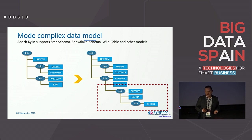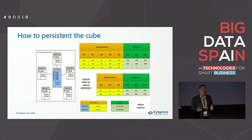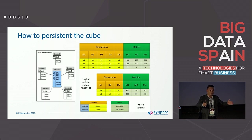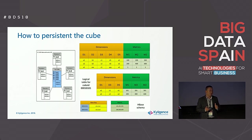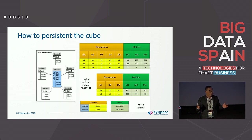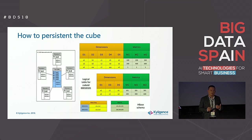We not only support the star schema but also very complicated data models like Snowflake and others. For storage, we use HBase as a key-value store. The key is actually your dimension combination, and the value is your metrics result — sum, count, even distinct count. We do a lot of hard work to resolve data explosion challenges. If we calculate every combination together, that would be a disaster. We use what we call partial cubing and many optimizations to reduce that. From our best practice, most production deployments cost about 20 to 30 percent of the source data. So if you have 100 terabytes of Hive data, which is slow, just give me 20 terabytes as additional storage and I can guarantee that 90 percentile of queries will return within one second.